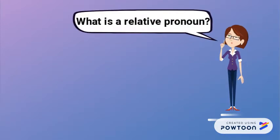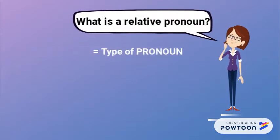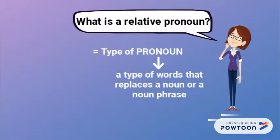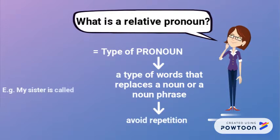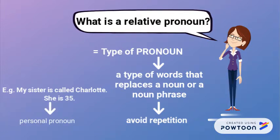So what is a relative pronoun? A relative pronoun is a type of word that replaces a noun or a noun phrase. It is used mainly for avoiding repetition. For instance, 'my sister is called Charlotte, she is 35.' Here, 'she' is a personal pronoun.